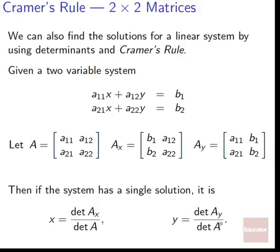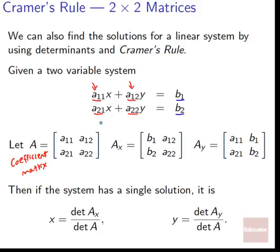Another way is Cramer's rule. Given a two-variable system with coefficients a11, a12, a21, a22 and constants b1 and b2, we create a normal coefficient matrix A. Then Ax is formed by replacing the x-column of A with the constants column, giving b1, b2 in that column and the rest of A as normal.